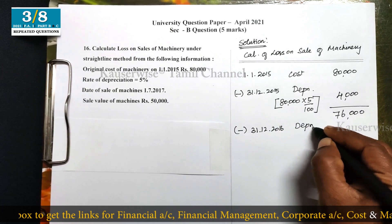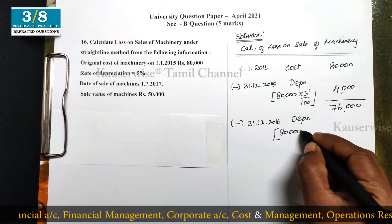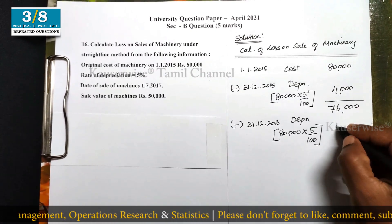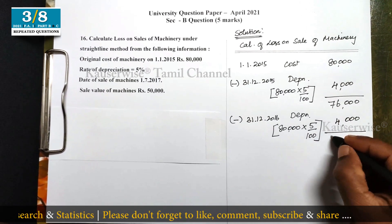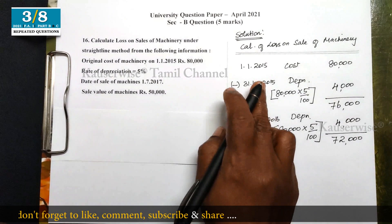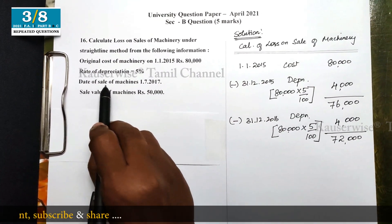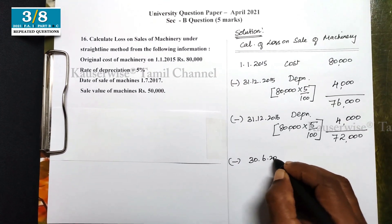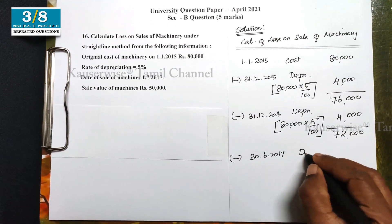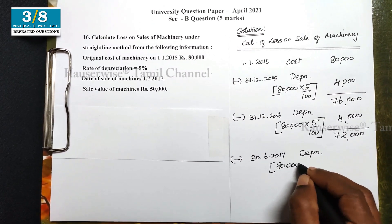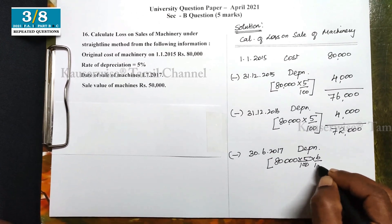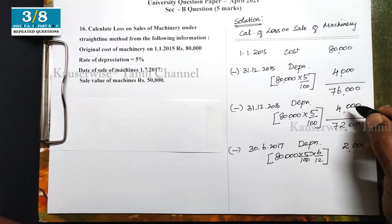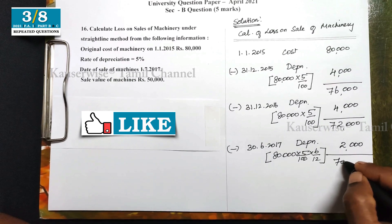2016 is the next year. For the full year 2016, depreciation is again 4,000. Then for 2017, the machine is sold on 1st July, so we calculate 6 months depreciation: 4,000 for 1 year means 2,000 for 6 months. Balance is now 70,000.